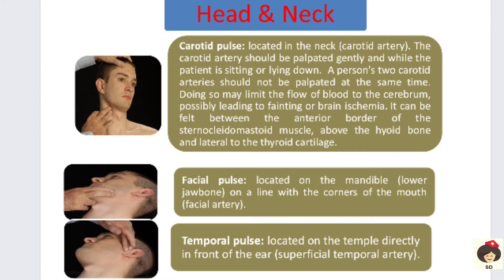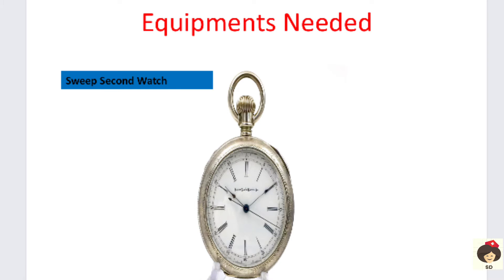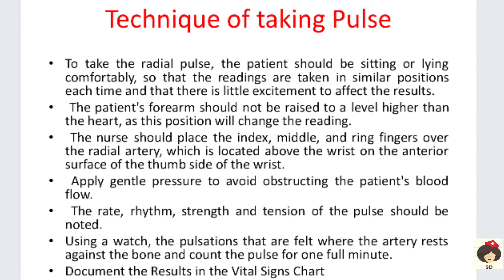These are the sites and locations of the pulse. For checking the pulse, the only equipment we need is a sweep second watch — a watch that shows seconds. Pulse is usually checked together with temperature, respiration, and blood pressure.